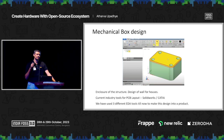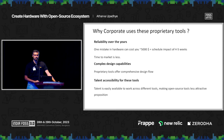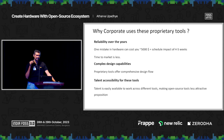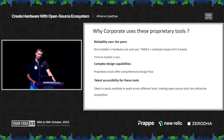Let's talk about why corporations use proprietary tools. The first and foremost point is reliability. If you make a mistake in hardware, you are going to incur a cost of at least $5,000 and set back your schedule by five weeks — because it takes at least three weeks to make a new product and two weeks to fix the problem. So $5,000 plus five weeks is a costly venture. That's why people like me also like to stick to what we know — proprietary tools.